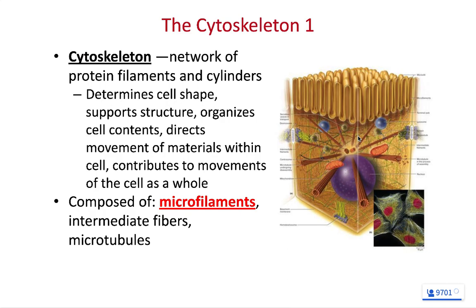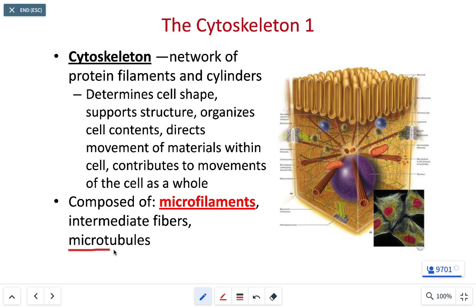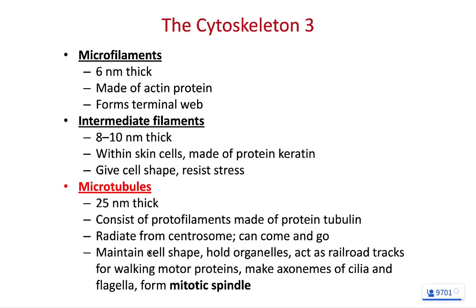Our cytoskeleton is a rigid framework of protein filaments in our cells. This framework gives our cell shape, helps organize organelles within the cell, and helps dictate cell movement — including the formation of pseudopods, endocytosis, and phagocytosis. Within our cytoskeleton there are three main kinds of fibers: microfilaments, intermediate filaments, and microtubules. Microfilaments, as the name implies, are the smallest — micro meaning small. Microfilaments are made up of a protein known as actin and are particularly common in skeletal muscle cells.